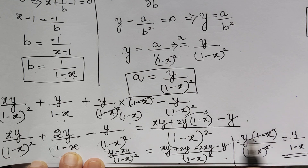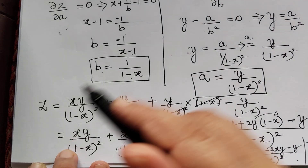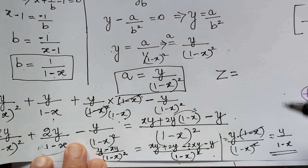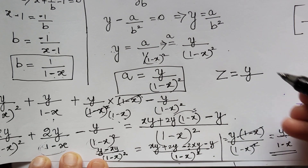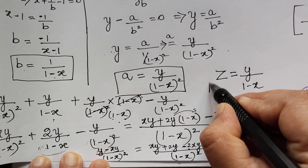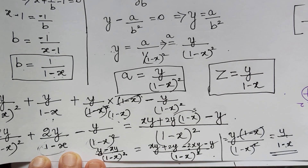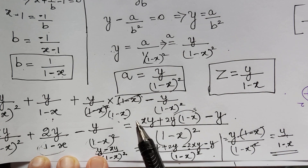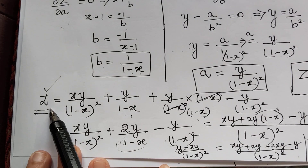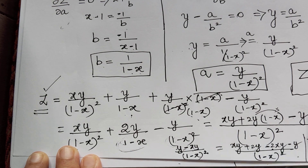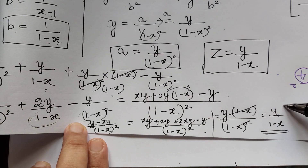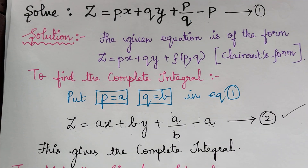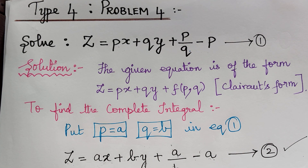So z equal to y by 1 minus x is the singular integral of the given problem. Hope you have understood how to find the singular integral for this type of problem. Please follow the next video lecture for problem 5. Thank you, bye-bye.